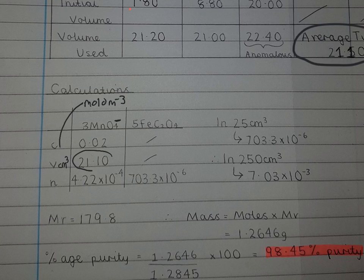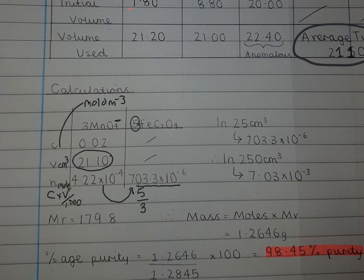Therefore, to calculate the number of moles, she's simply multiplied concentration times volume divided by a thousand to get it into decimeters cubed. To get the mole ratio, there's a larger number of moles of iron, so the mole ratio is 5 divided by 3 because it's a 5 to 3 ratio. And that's how she's ended up with this number here. So in 25 centimeters cubed, she has 7.033 × 10⁻⁴ moles of...